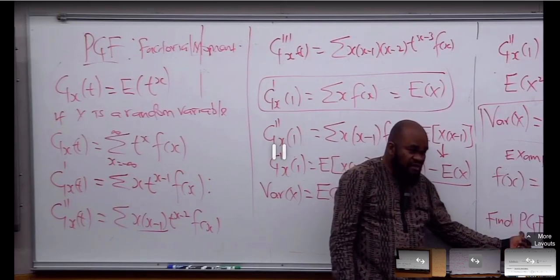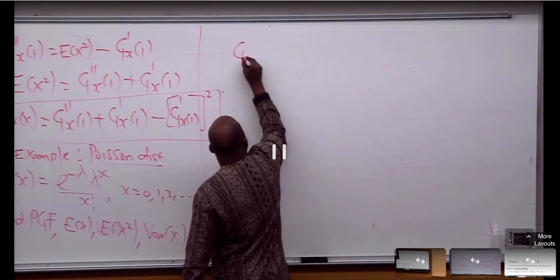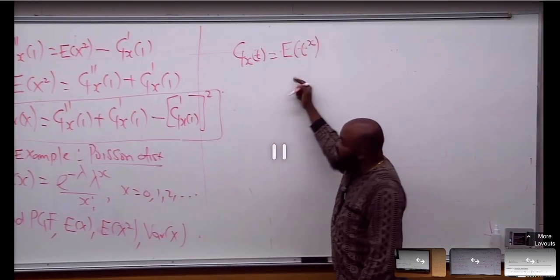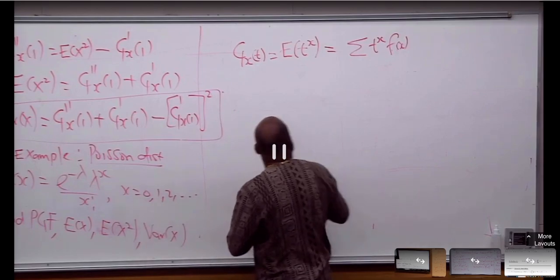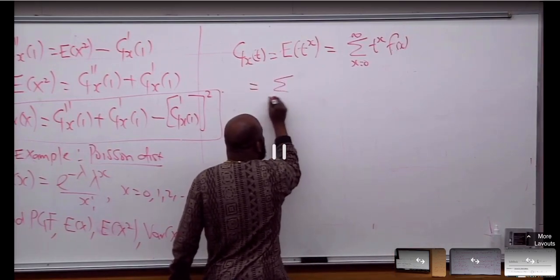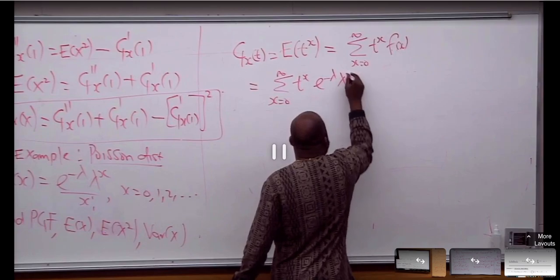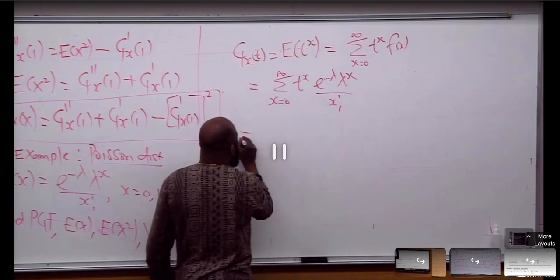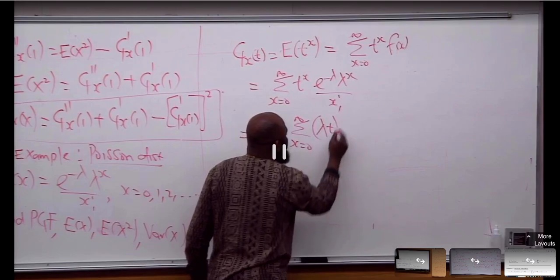Please pay attention. If I want to find that, I'm going to write G_S(t), which is the expected value of t^S. For a discrete random variable, that's the summation of t^s times f(s), where s goes from 0 to infinity. Now substituting the Poisson distribution: the e^(-λ) is a constant, so it comes out of the sum, and I'm left with λt raised to the power s over s factorial.